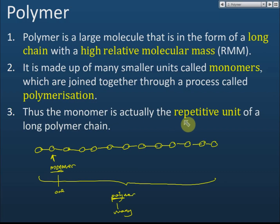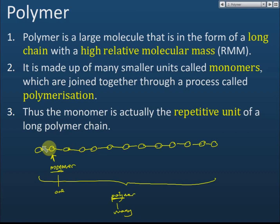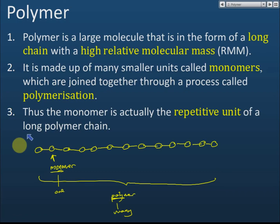The monomer is actually the repetitive unit of a long polymer chain — the same structure repeats again and again, potentially thousands of times. The monomer can be the same substance repeated, or it can be two different substances.